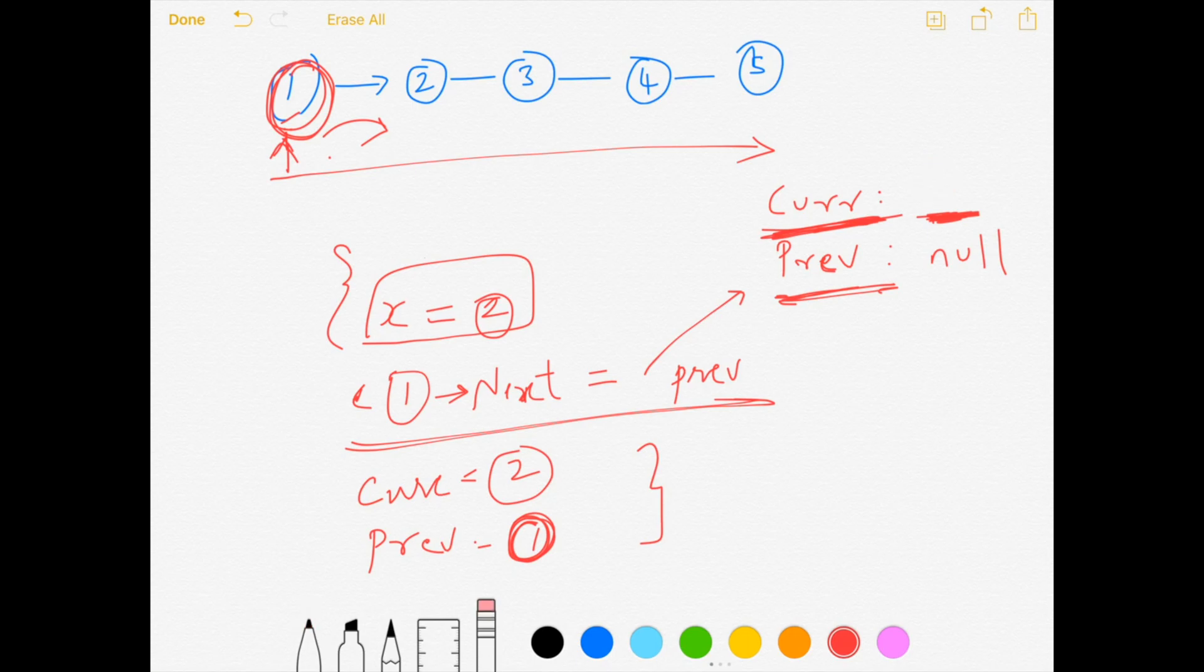Let me update these values now because these have changed. My current is two. My previous is one and I will reset x. When I say x, x means the current value's next variable, which will give me three. x is the current value's next node, which is three.